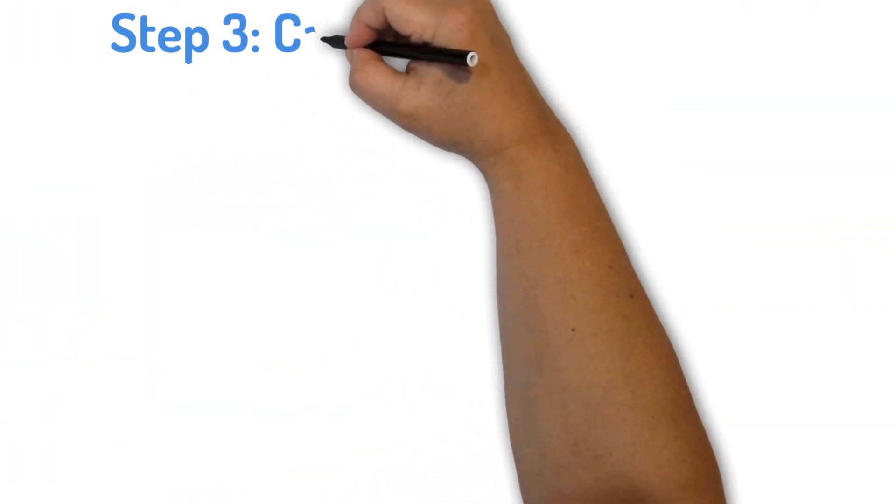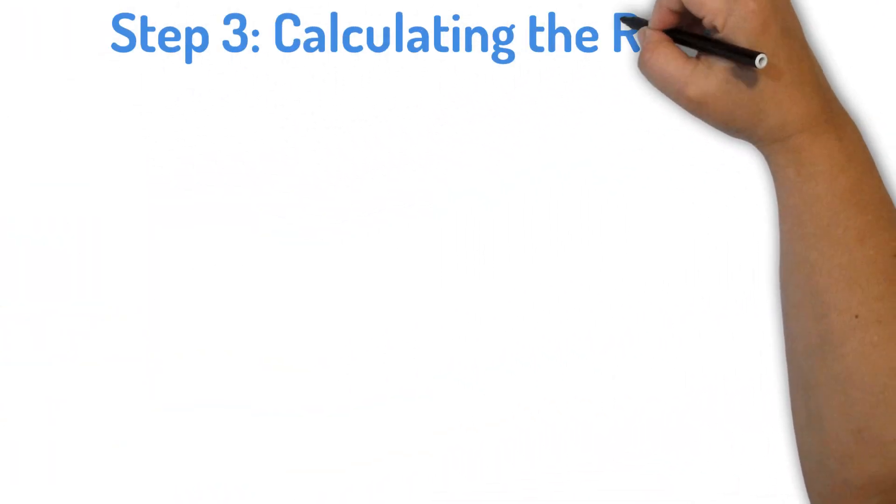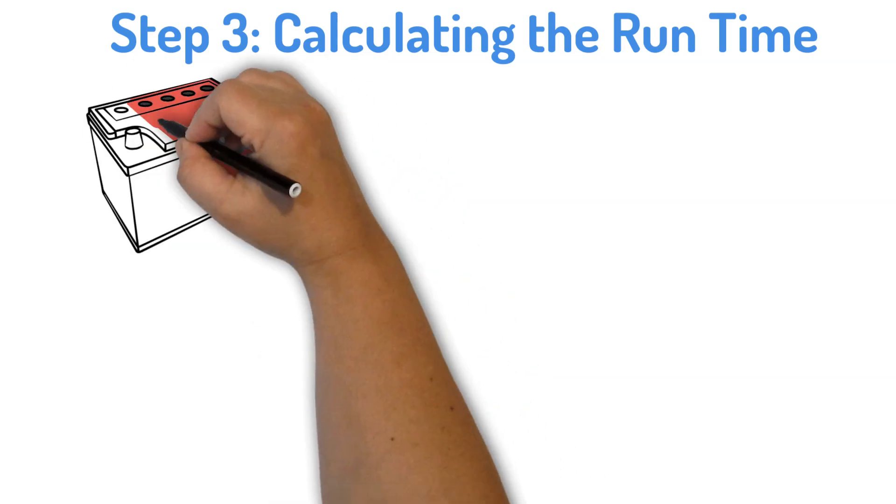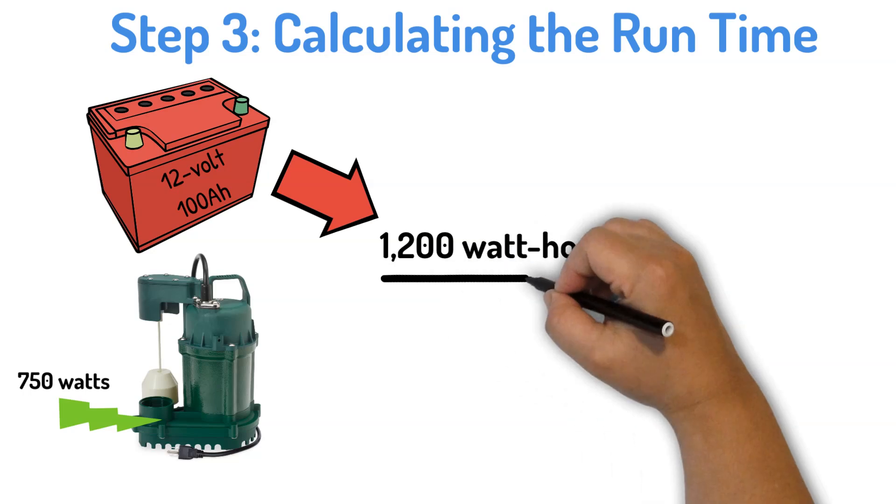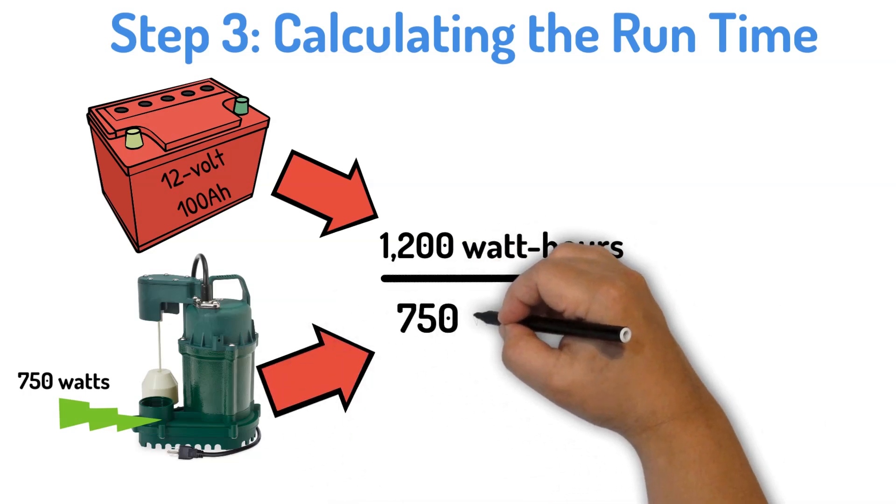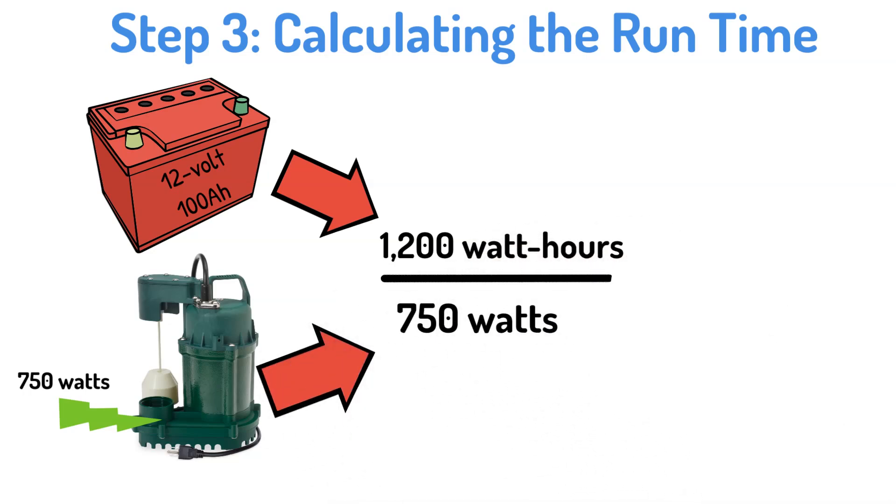Step three, calculating the run time. To find out how long our 12-volt battery can run the sump pump, we divide the battery's capacity by the power consumption of the pump. So in an ideal scenario, a 12-volt battery with 100 amp hours of capacity can run a 750-watt sump pump for about 1.6 hours.